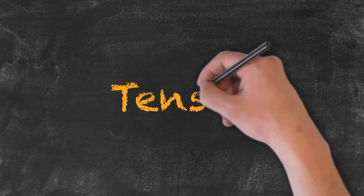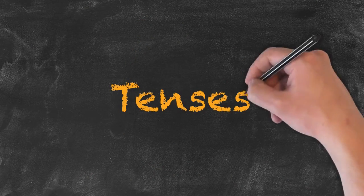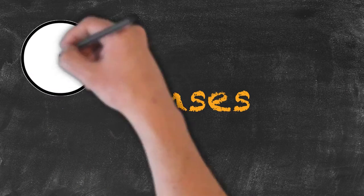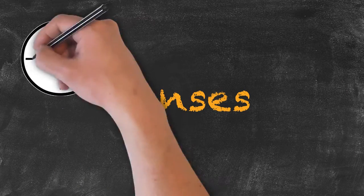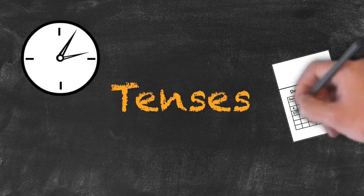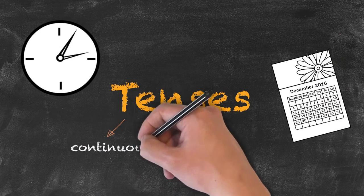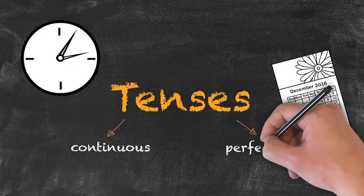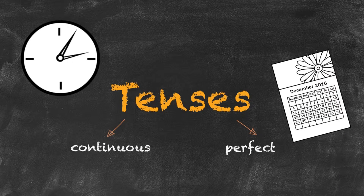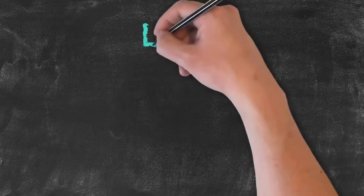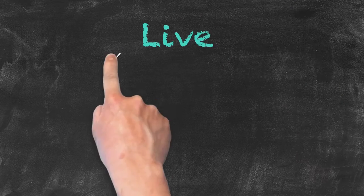Auxiliary verbs help us form our tenses. Many of the tenses will use these auxiliary verbs, particularly our continuous tense and our perfect tense. There are additional tenses that use auxiliary verbs, which we'll get into when we talk about individual tenses. Another important aspect of our verbs is that they generally tell us what tense the sentence has been formed in.